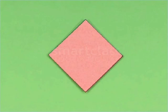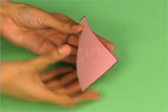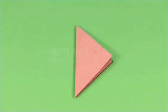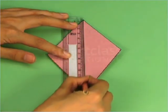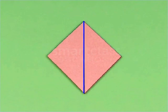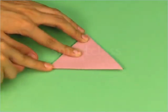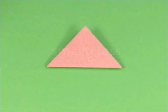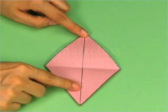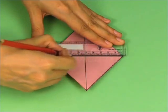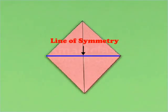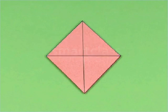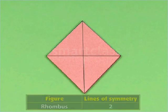Lastly, take the cutout of the rhombus. Fold it along one of its diagonals so that the two parts of the rhombus overlap each other. Unfold the rhombus and draw a line on the crease. This line of fold is the first line of symmetry of the rhombus. Now, fold the rhombus along the second diagonal so that the two parts exactly overlap each other. Unfold the rhombus and draw a line on the crease. This is the second line of symmetry of the rhombus. We cannot fold the rhombus in any other way so that its two parts exactly overlap each other. Thus, a rhombus has two lines of symmetry.